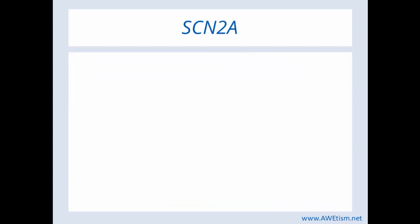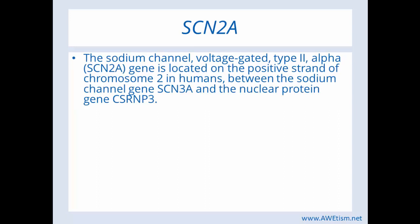Let's look at SCN2A. These gene names can be confusing — SCN2A is shortened for the sodium channel voltage-gated type 2 alpha. Sodium channel for SCN, 2 for the type 2, and A from the alpha. SCN2A gene is located on the positive strand of chromosome 2, between sodium channel gene SCN3A and the nuclear protein gene CSRNP3. That's just where SCN2A is located and where they get these names from.